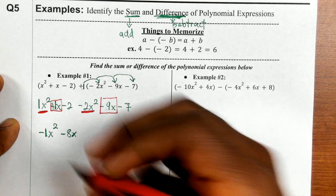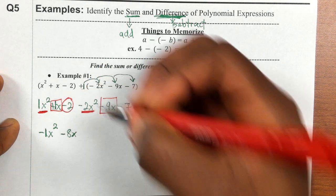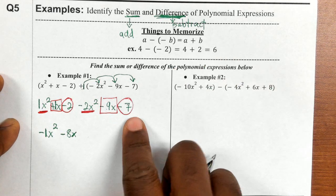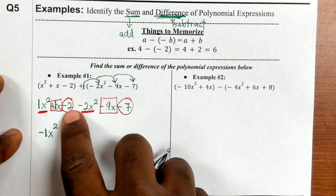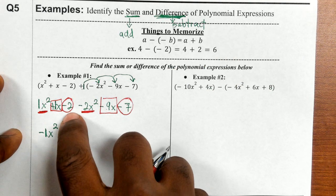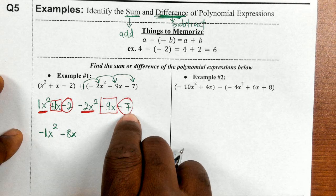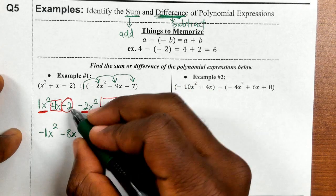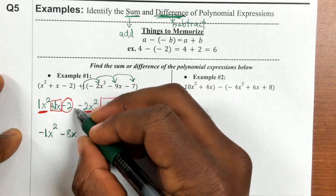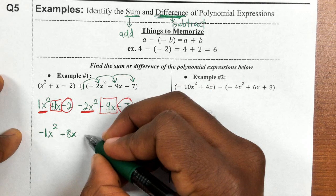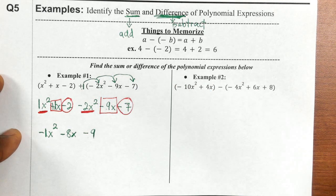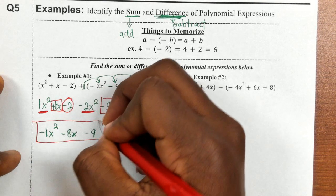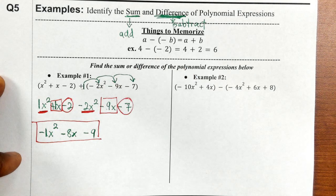Now we combine the constants. Negative 2 minus 7 gives me a bigger negative — negative 9. So the result for the first problem is negative x squared minus 8x minus 9.